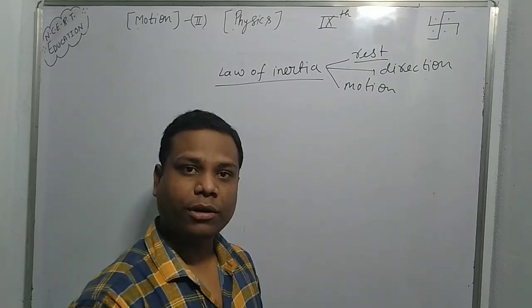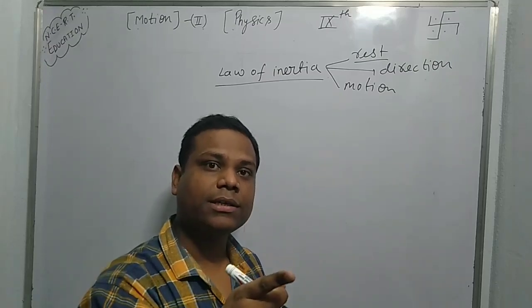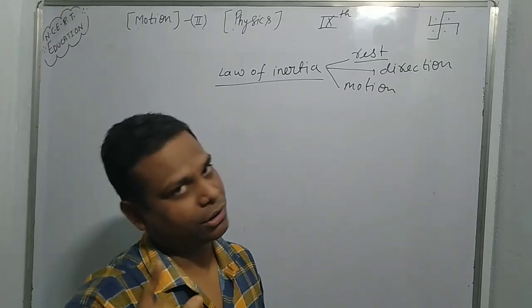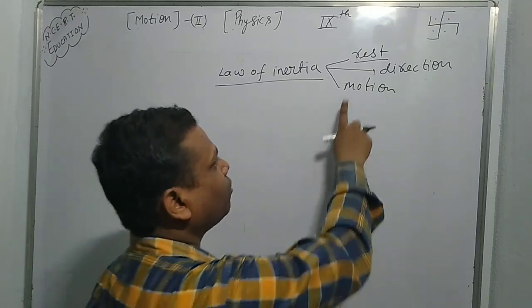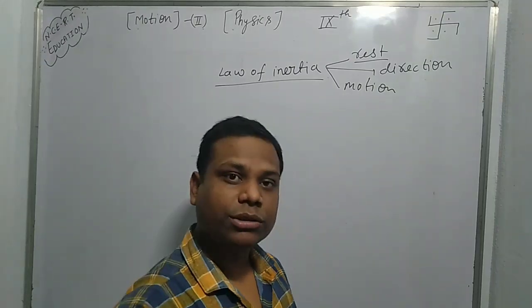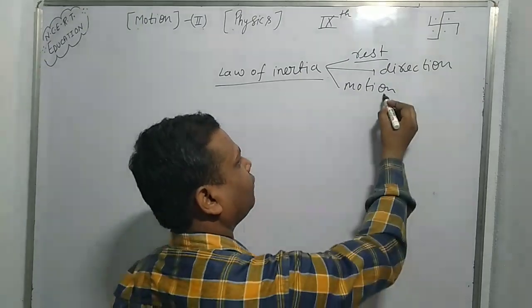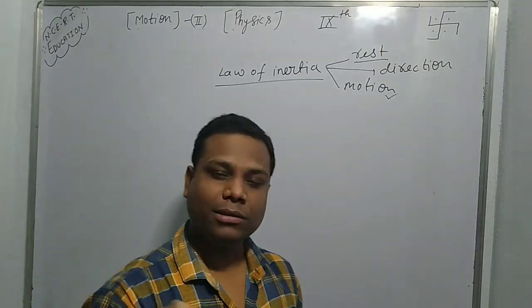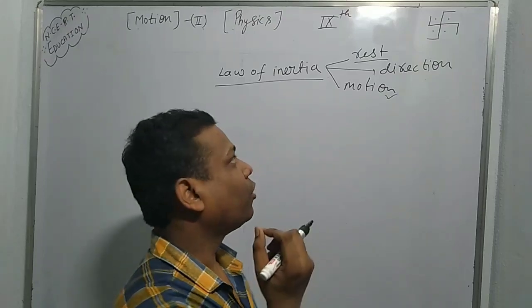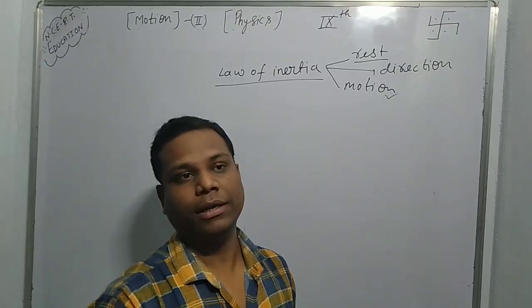Inertia of rest: if an object is in a rest position, it wants to remain at rest until an external force is applied on it. Inertia of direction: if an object moves in a particular direction, it continues to move in the same direction until an external force is applied. Inertia of motion: if an object is in motion, it wants to remain in motion until an external force is applied.